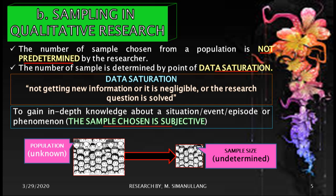In qualitative research, the researcher stops collecting data when the data reaches saturation — meaning no need to get more information — in other words, when the research question is solved.